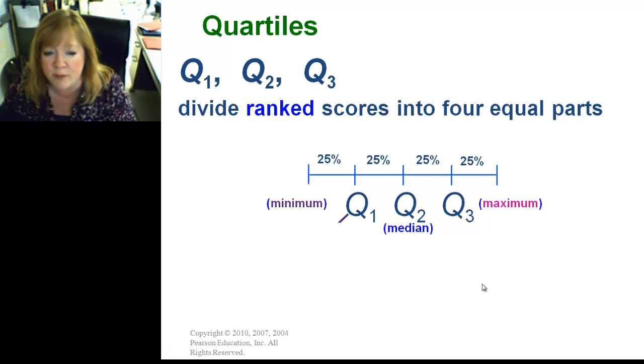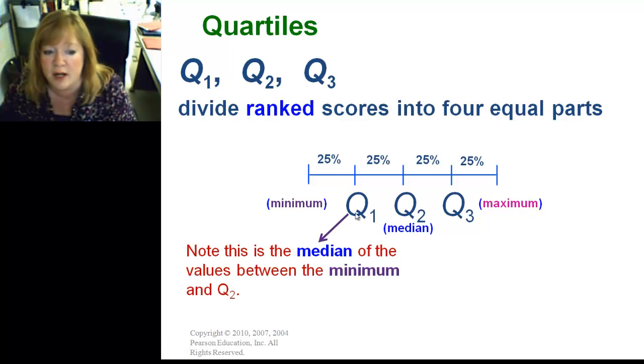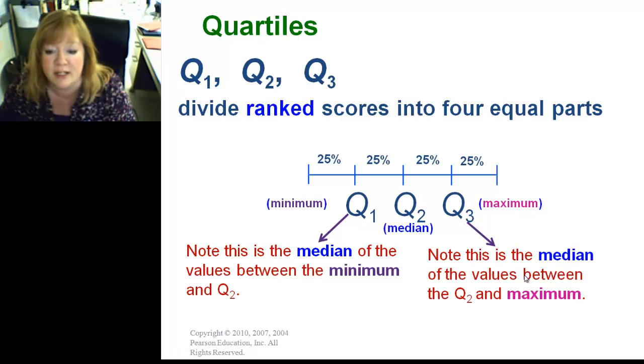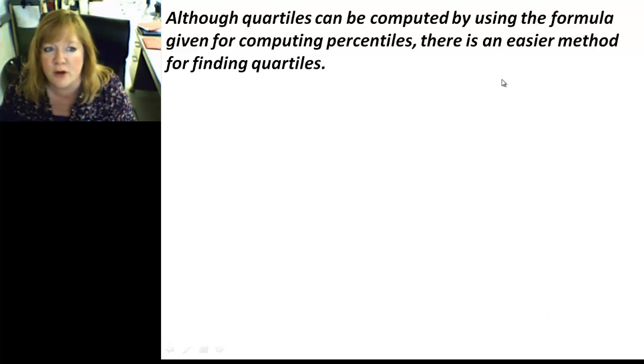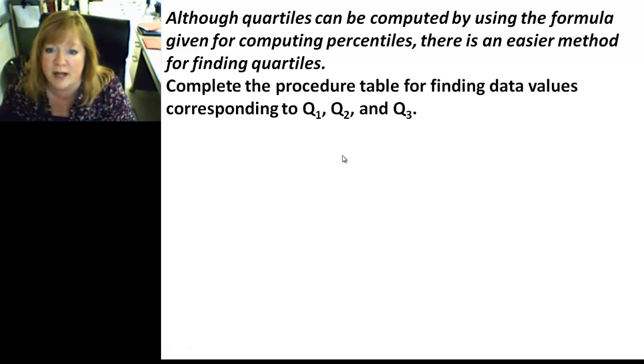Now, one thing I want you to notice is that Q1 is the middle point, middle value of the minimum to the Q2. So, basically, to define Q1, all you have to do is take the median of the minimum and the median. So, halfway between these two data values is Q1. Halfway between Q2 and the maximum is the Q3. It's the median of the values between Q2 and the maximum. I'm trying to kind of show you, you're taking the median of the median, that's a shortcut. So, although quartiles can be computed using the formula computing percentiles, like P25, there's an easier method. And that's what I was just trying to allude to.